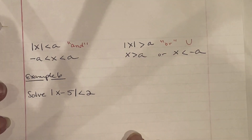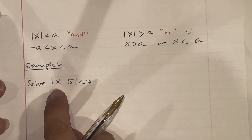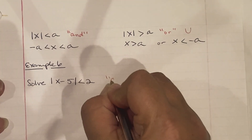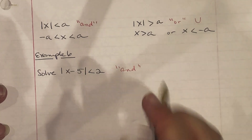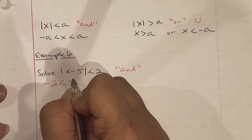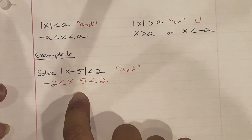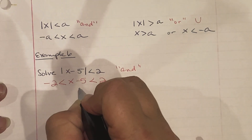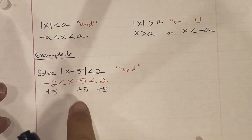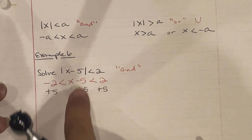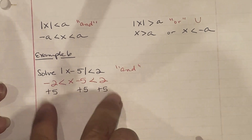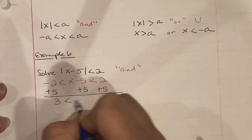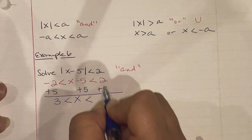Example 6: solve the absolute value of x minus 5 less than 2. The inequality is eating the number, so this is our AND statement. We write it as negative 2 less than x minus 5 less than 2. The inside comes out; the number on the outside becomes negative on the left and positive on the right. Add 5 to all three parts to balance: negative 2 plus 5 is 3, x stays, 2 plus 5 is 7. So 3 less than x less than 7.